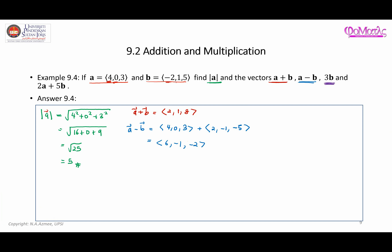Next, let's find the scalar multiplication 3 times vector B. With scalar 3 outside and B = (-2, 1, 5), the answer is straightforward: 3×(-2) = -6, 3×1 = 3, and 3×5 = 15. So 3B = (-6, 3, 15).